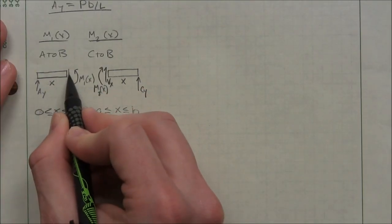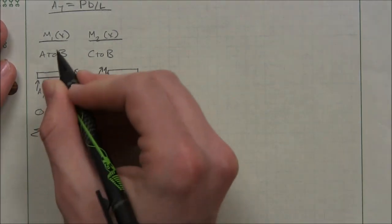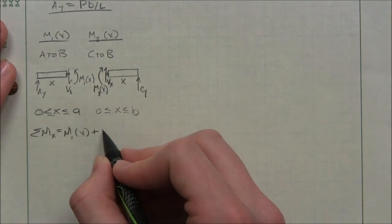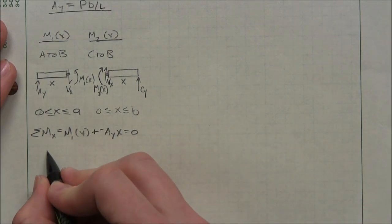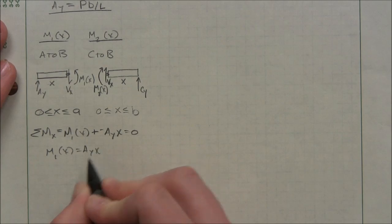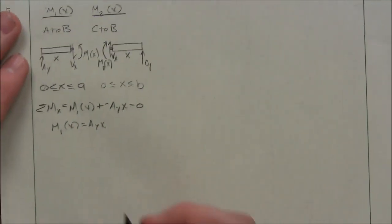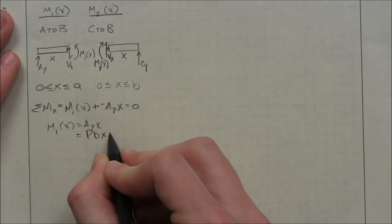So now I'm going to sum the moments at the cut here and at the cut here. For M1, that's going to be M1 of X plus a negative AYX equals zero. So M1 of X equals AYX. But AY, since we did our statics already, is PB over L. So that equals PBX over L.